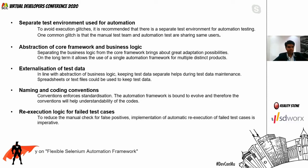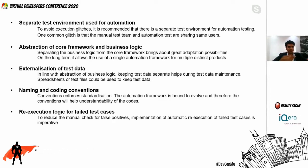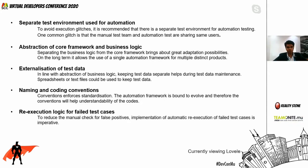Like in development, naming and coding conventions are important in an automation framework because the work is technical. For maintenance, future development, and enhancement, those conventions are handy to have.